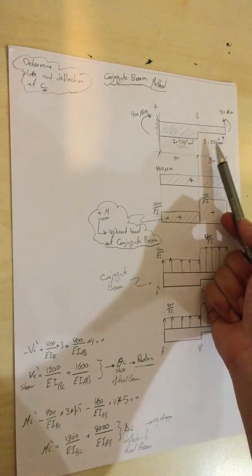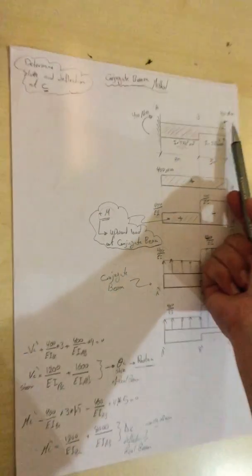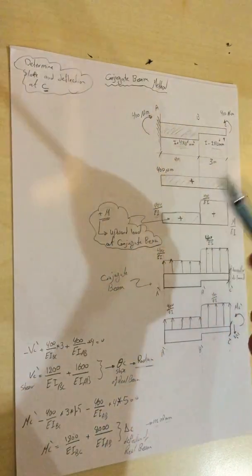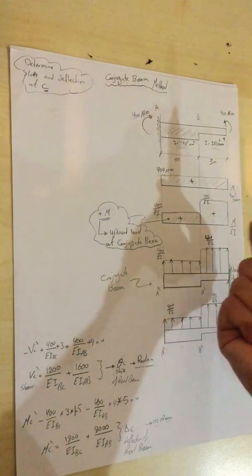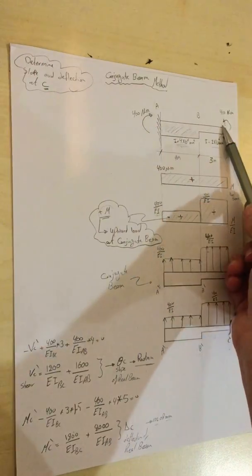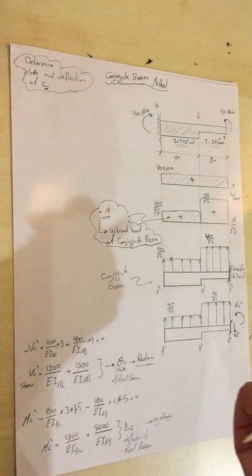Every segment has different moment of inertia and an external applied moment which is 400 Newton meters. The requirement for this example is determining the slope and deflection at C, which is here.